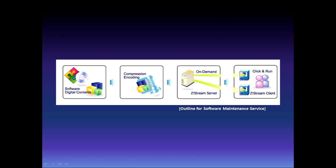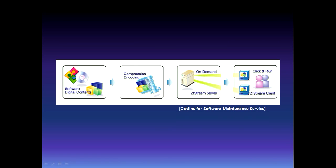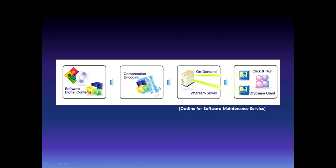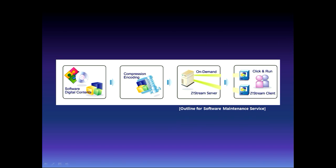These pictures show the details of packing and streaming processes. Unlike the ordinary method of software installation, Zstream compresses Windows desktop software such as Microsoft Office into a single pack, without any modification of the original source code. This pack is then uploaded to the server by the administrator, and the server side is ready to go. Upon the user's request, the necessary portion of the pack is streamed to the user's client PC in an on-demand manner.